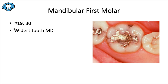Using the universal tooth numbering system, this includes tooth number 19 and number 30. Remember how the maxillary first molar was the widest tooth faciolingually in the entire mouth? Well, the mandibular first molar is the widest tooth mesiodistally in the entire mouth — and this isn't the only example we'll see of how the mandibular first molar is a complete opposite of the maxillary first molar.